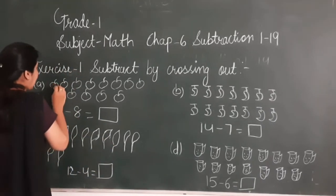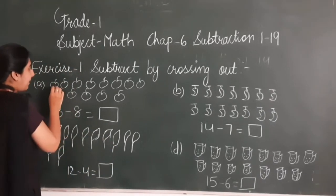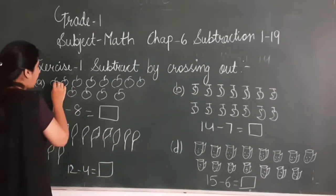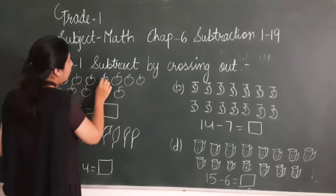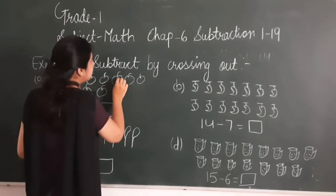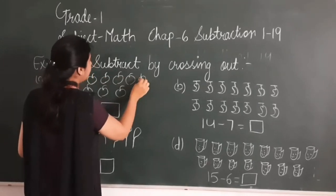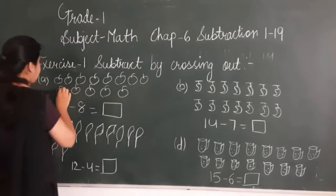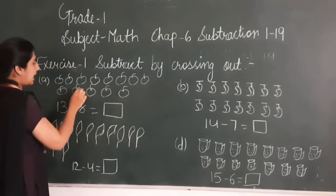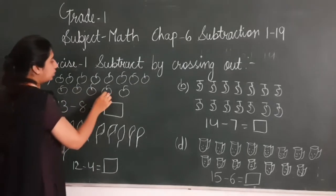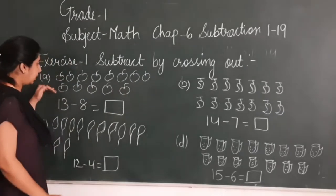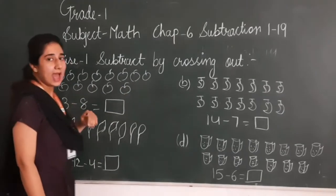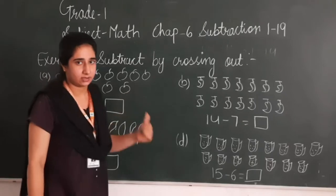First of all, count how many apples are there: 1, 2, 3, 4, 5, 6, 7, 8, 9, 10, 11, 12 and 13. So totally 13 apples are there.